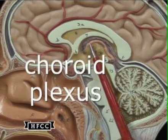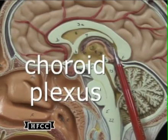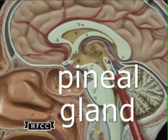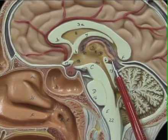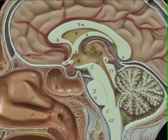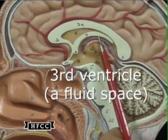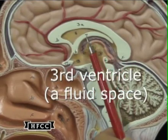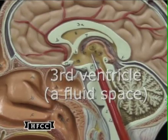Looking here at the choroid plexus — vascular tissue that will produce CSF into the ventricles. The pineal gland there is that little pink structure that bulges; the rest of the pink is not the gland. The third ventricle is a space that the pointer is encircling, which will contain CSF, and it has walls I'll be getting to next.